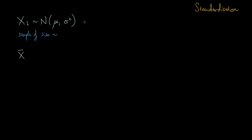We can call this our data distribution, and then we can write the distribution of the means, which is going to have a normal distribution as well with the same mean as the data, but it's going to have a scaled variance. The variance is going to be sigma squared — the variance of the original distribution — divided by n, which is the sample size.